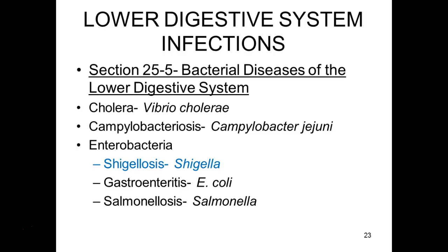Lots of bacteria can cause infections of our lower intestinal system — the small and large intestine. These include cholera caused by Vibrio cholerae, campylobacteriosis caused by Campylobacter jejuni, shigelosis caused by several Shigella species, gastroenteritis usually caused by pathogenic strains of E. coli, and salmonellosis caused by several species of Salmonella.